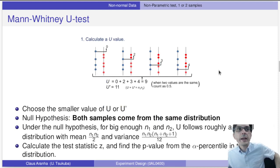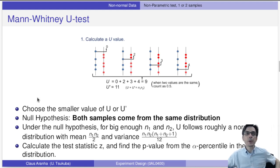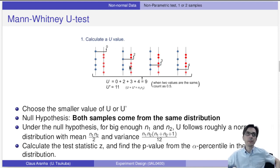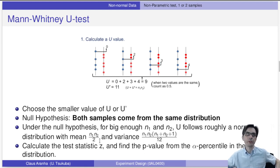We choose the smaller of U or U-prime. The null hypothesis is that both samples come from the same distribution. Under the null hypothesis, for large enough n1 and n2, U follows roughly a normal distribution with mean n1 × n2 / 2 and a defined variance formula. Once we have U and the normal distribution parameters, we can compute a z-statistic, then calculate the p-value and compare against an alpha percentile.